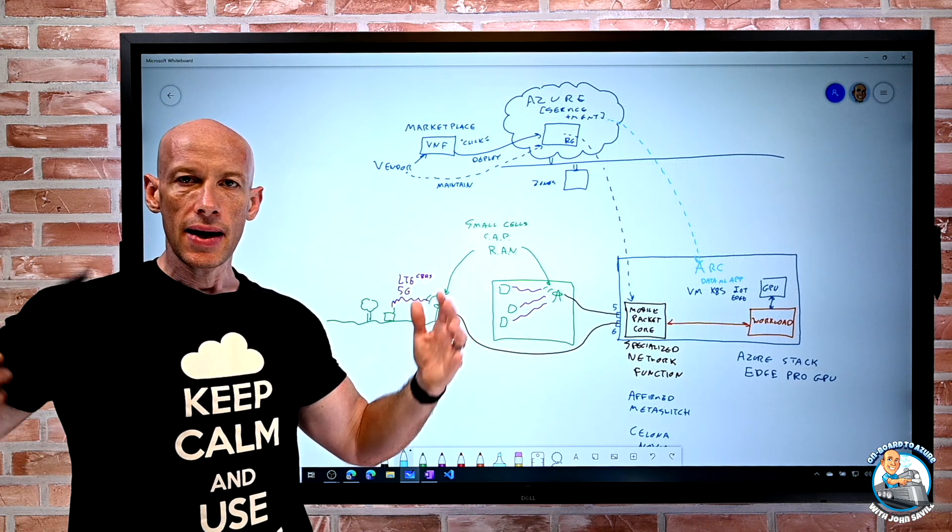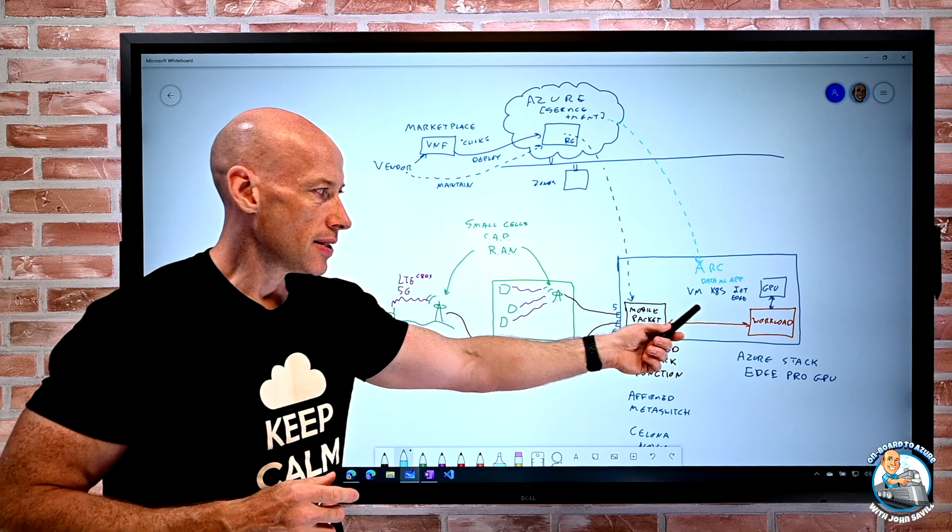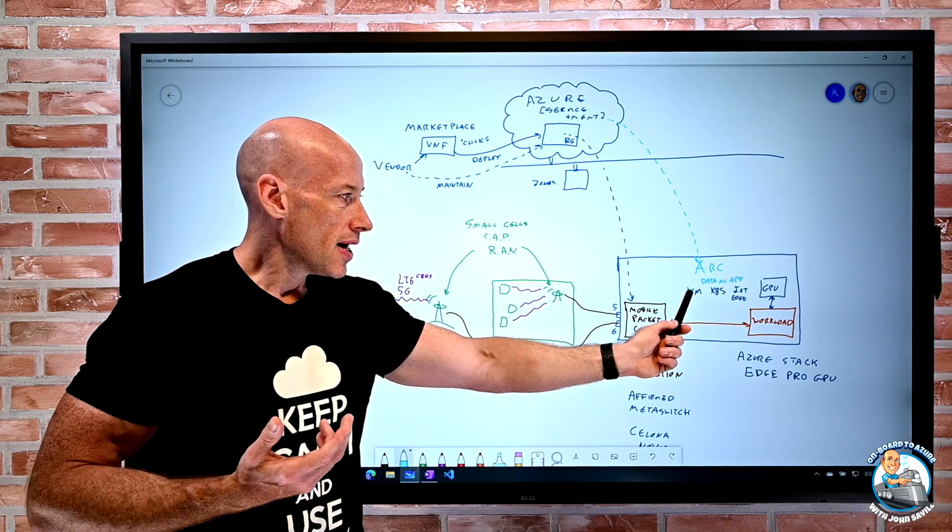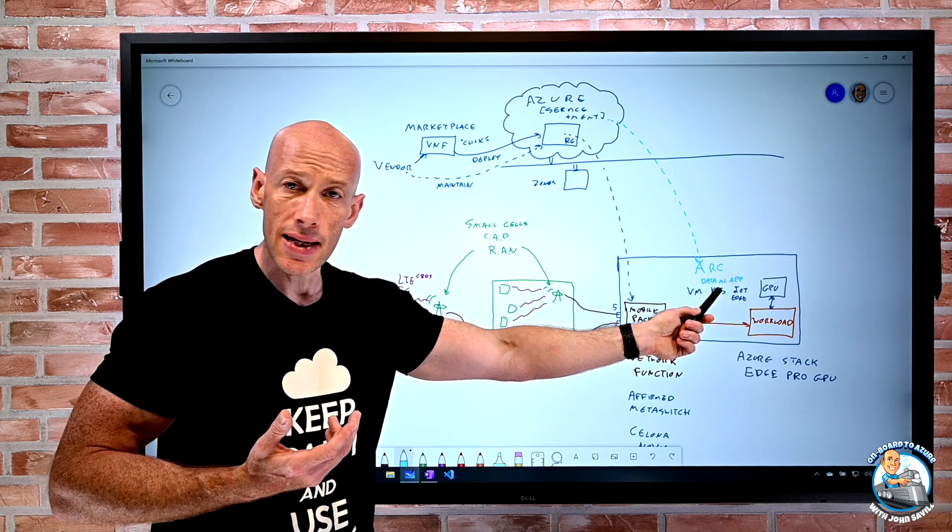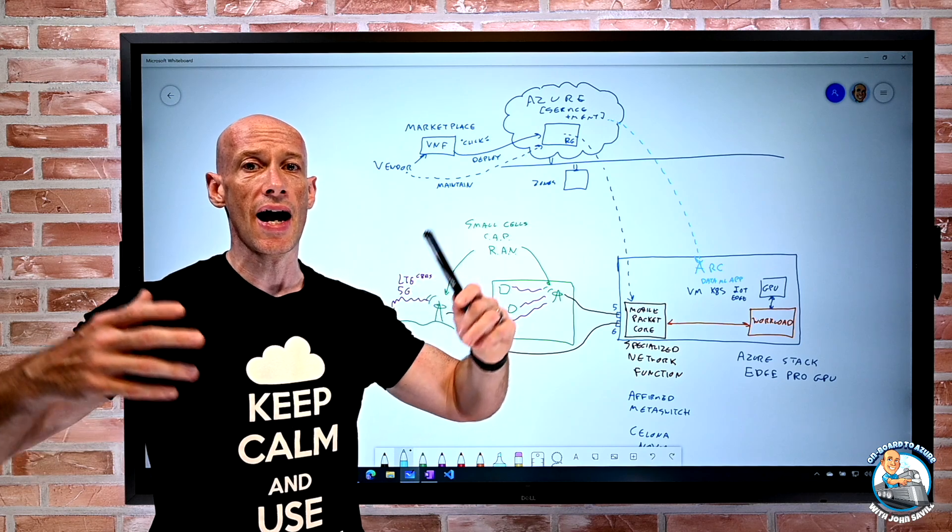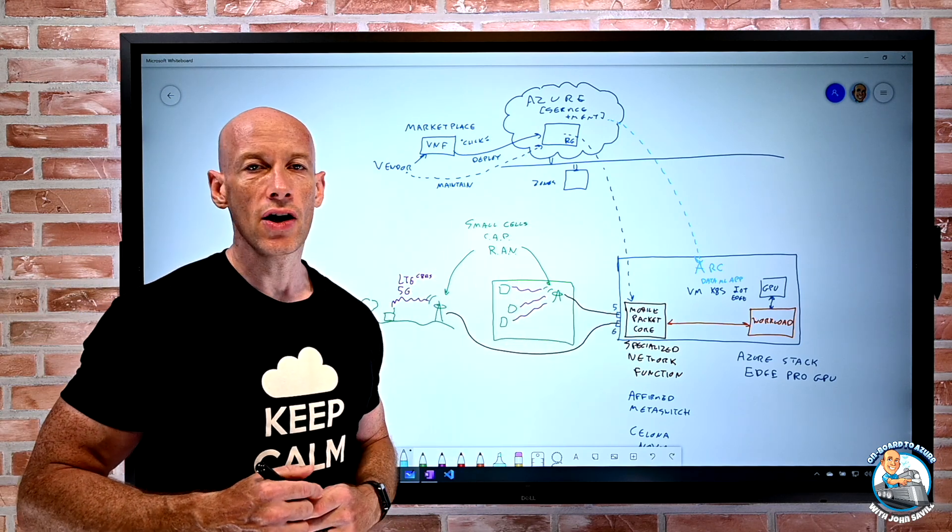And then, I want workloads close to this as well. Well, this is Azure Stack Edge. I can run VMs and Kubernetes and IoT Edge. And then once I have Kubernetes here with Arc, Arc then lets me have Azure Data Services, Azure Machine Learning, Azure App Services, all running on there as well.